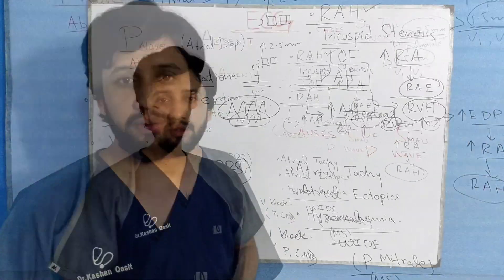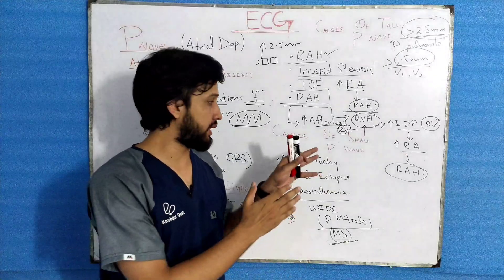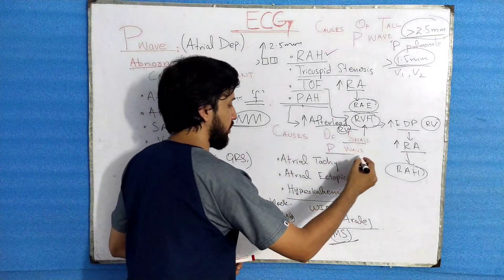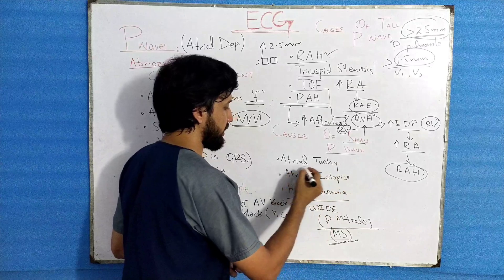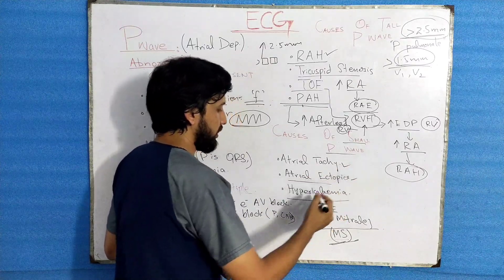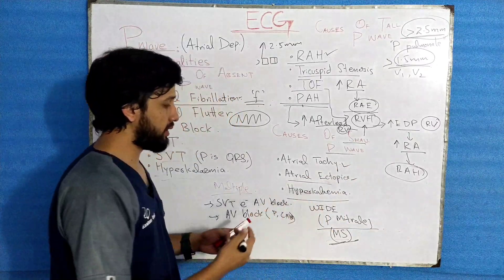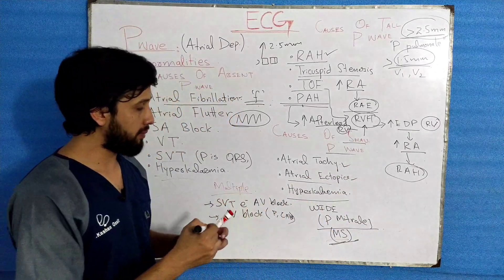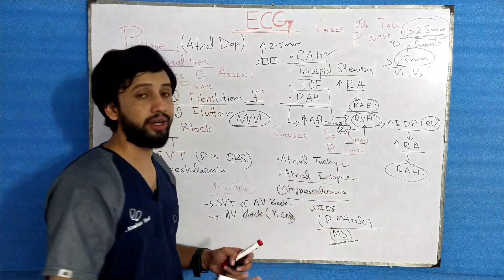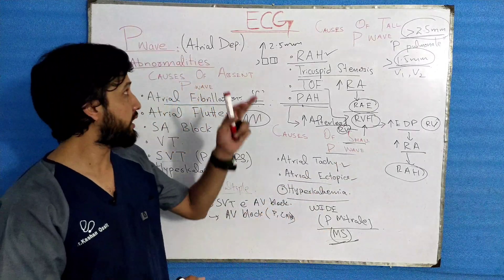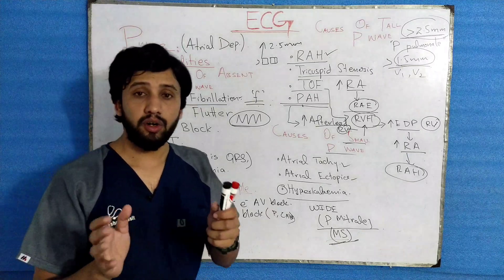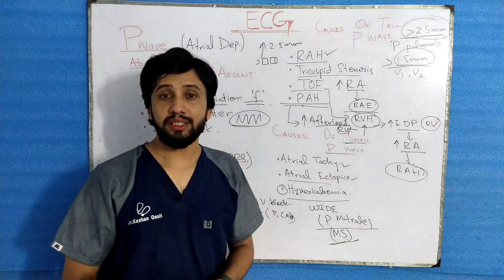Then comes another abnormality, which is the small P wave. It is seen in the following conditions: tachycardia, ectopy, and hyperkalemia. In hyperkalemia, the P wave can be small or it can be absent.